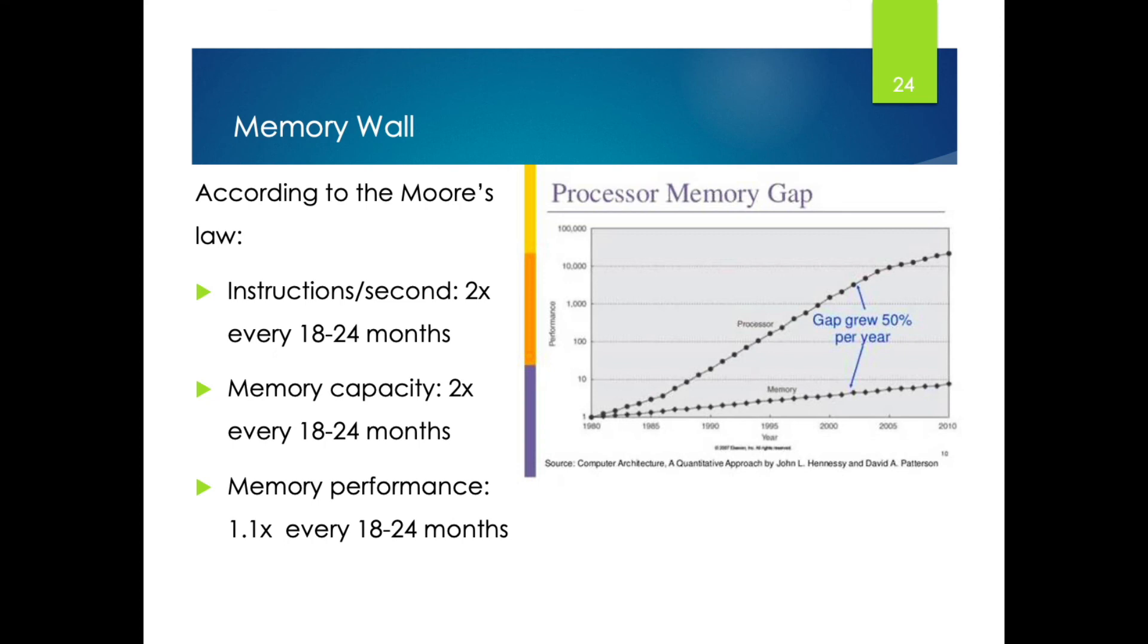Now about the memory wall. According to Moore's Law, you can see that the number of instructions that the CPU can process per second is doubled after every two years. The memory capacity produced also doubles after every two years. But the processing speed between the CPU and the memories outside the CPU chip is not the same, and the growing disparity of the speed between the CPU and the memory outside the CPU chip is what we call the memory wall.